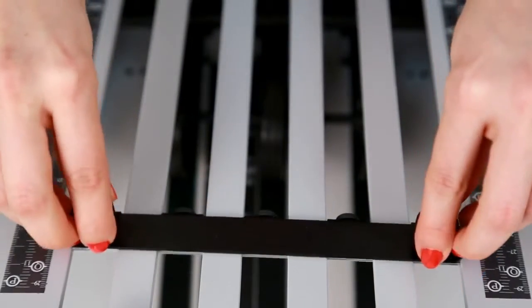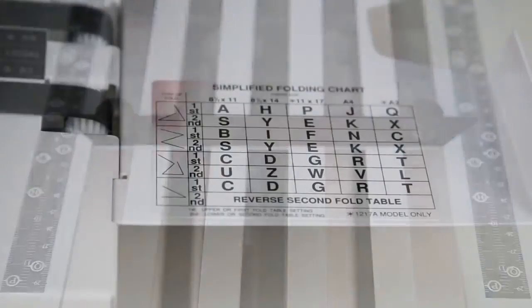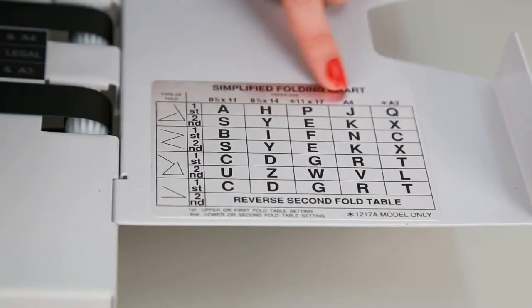Here's how it works. The first step is setting up the fold type by lining up the paper stops on both the front and rear fold tables. You can use the folding chart on the exit tray for easy reference.